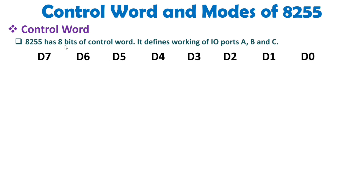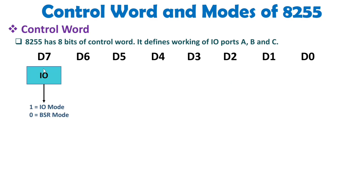Let us see what is happening with the first bit, D7. This D7 bit justifies IO Mode or BSR mode. If it is 1, then 8255 will function in IO Mode. If it is 0, then 8255 will be working in BSR mode. How it will work in IO Mode, I'll be explaining as well.